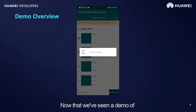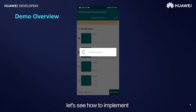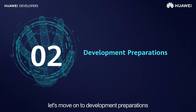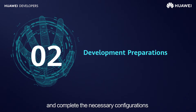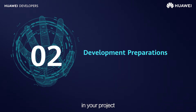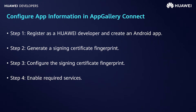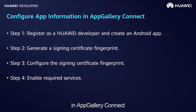Now that we have seen a demo of biometric authentication in action, let's see how to implement the relevant functions. First, let's move on to Development Preparations. Before integrating FiddleKit into your app, you need to configure app information in AppGallery Connect and complete the necessary configurations such as dependency package configurations in your project. Four steps are involved in configuring app information in AppGallery Connect.